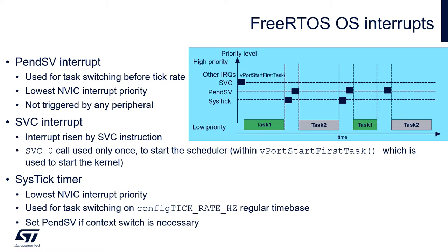PendSV interrupt is a software interrupt which is used to switch the context between one task to the other. As it is a software interrupt, it can be triggered by software from other interrupts or from user code. In practice, it is called usually by the SysTick, which is the timer giving the same amount of time for each task to be executed. PendSV can also be triggered by the kernel in case a task finalizes its job before this time, or in case there is a new task with higher priority than the currently executed one.